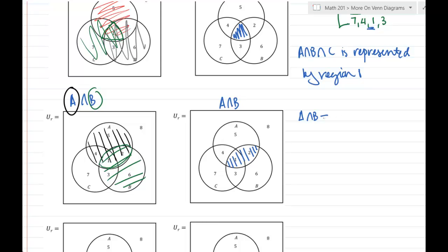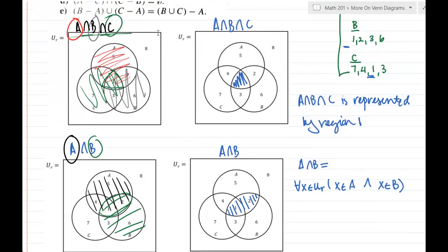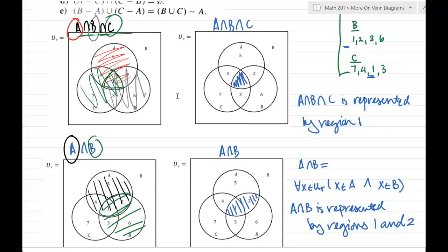One more time, just to be clear, let's go ahead and write the logical representation of this set operation. So A intersect B, in this case, we've got all elements in our universal set. Then X must be in A and X must be in B. So we've got a stronger condition here. Notice how our intersection is shrunk down in a smaller region than our union. So now we can go ahead and compare. We've got A intersect B intersect C here with region one, and then A intersect B is represented by regions one and two.